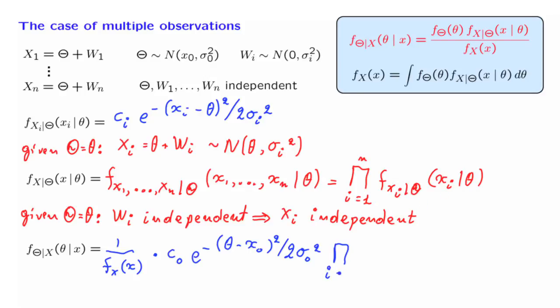It is this product here. It's a product of n terms, one for each observation. And each one of these terms is what we have found earlier. So I'm just substituting this expression up here.